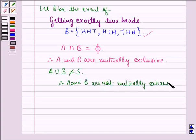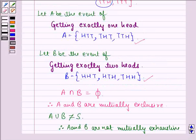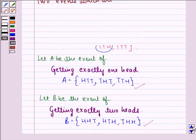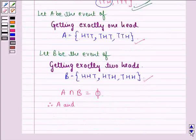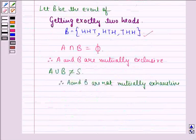Because they would have been mutually exhaustive if their union, that means all the elements of A and B together, would have given the sample space. Then they would have been mutually exhaustive. But since A union B is not equal to the sample space, therefore they are not mutually exhaustive.